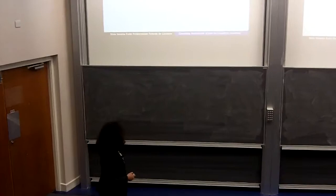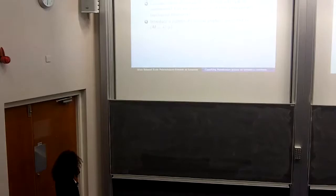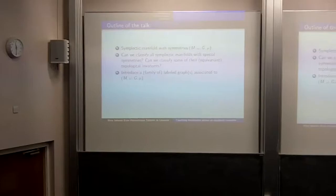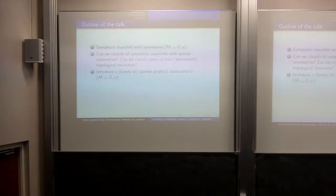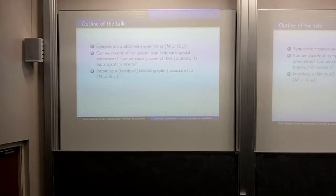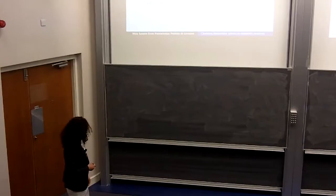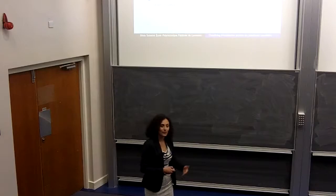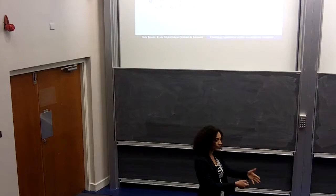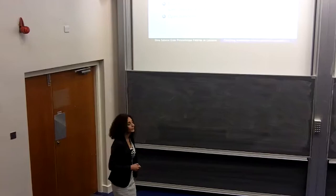To face the classification question, I will introduce a family of objects that are relatively easy to study and visualize — labeled graphs which keep information about the action. Quite surprisingly, in some very nice examples these graphs tell us everything about the equivariant cohomology ring and Chern classes, so classifying the topological invariants reduces to classifying these graphs. I will give many examples — many pictures — to convince you these graphs really encode a lot of information about the manifold. I'll end with some open questions I'm working on.